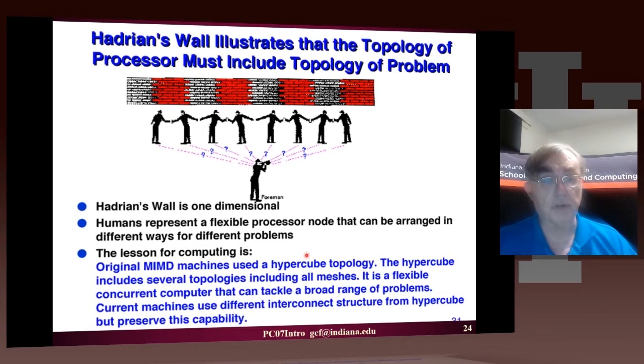So you should always try to build, if you wanted to have a general-purpose computer, its network must support general topologies.